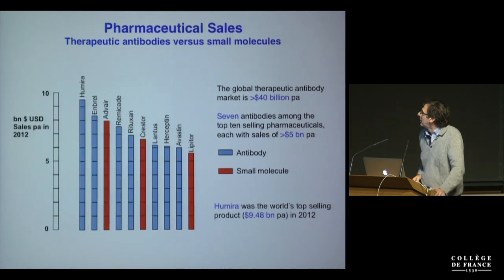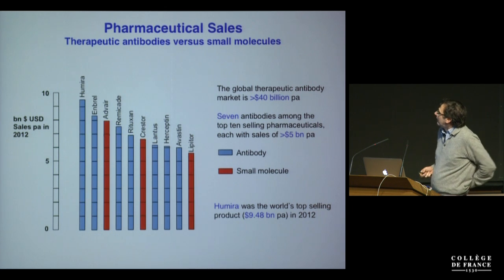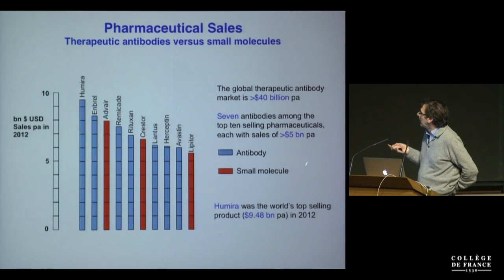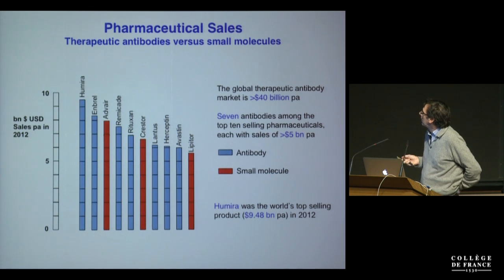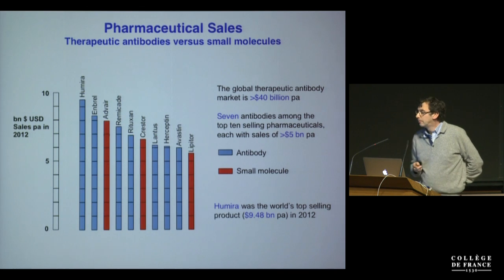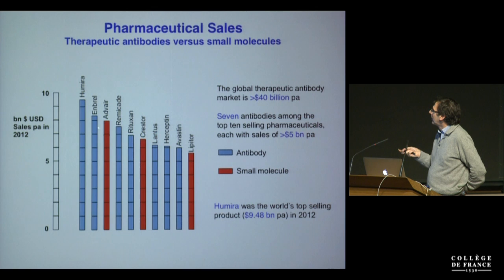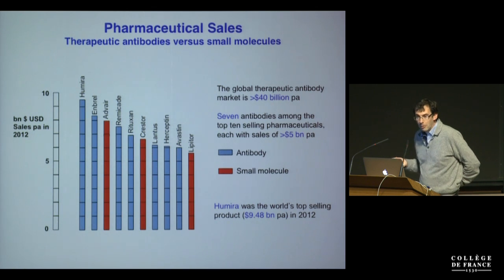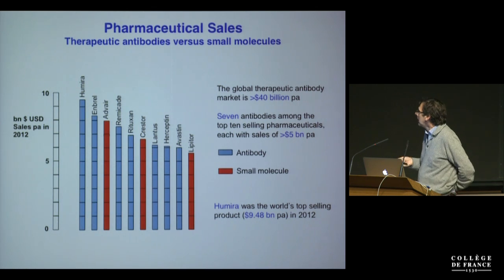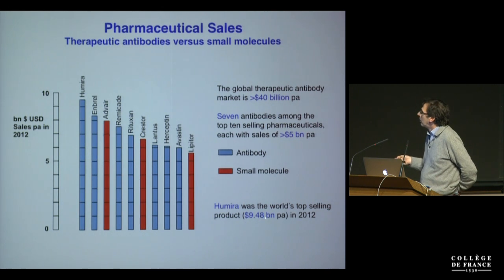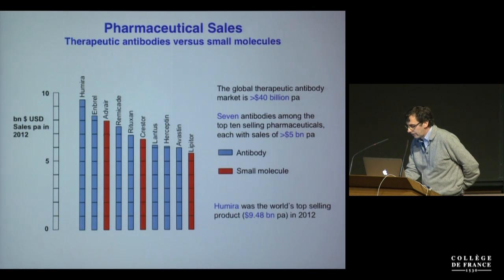Why is it interesting to go after therapeutic antibodies? In 2012 the global therapeutic antibody market was over $40 billion per annum, and amazingly seven of the top ten selling pharmaceuticals were antibodies. Humira, which is still the world's top selling drug, is an antibody which neutralizes TNF-alpha.